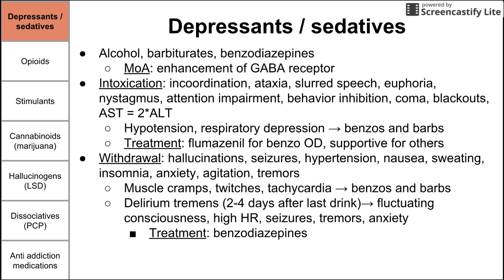We do want to treat delirium tremens if we see it. The key symptom to differentiate delirium tremens from other withdrawal symptoms is the fluctuating consciousness. We would ask the patient if they remember kind of passing out or fading out during their withdrawal period. The DTs — delirium tremens — are pretty serious and can be fatal withdrawal symptoms.